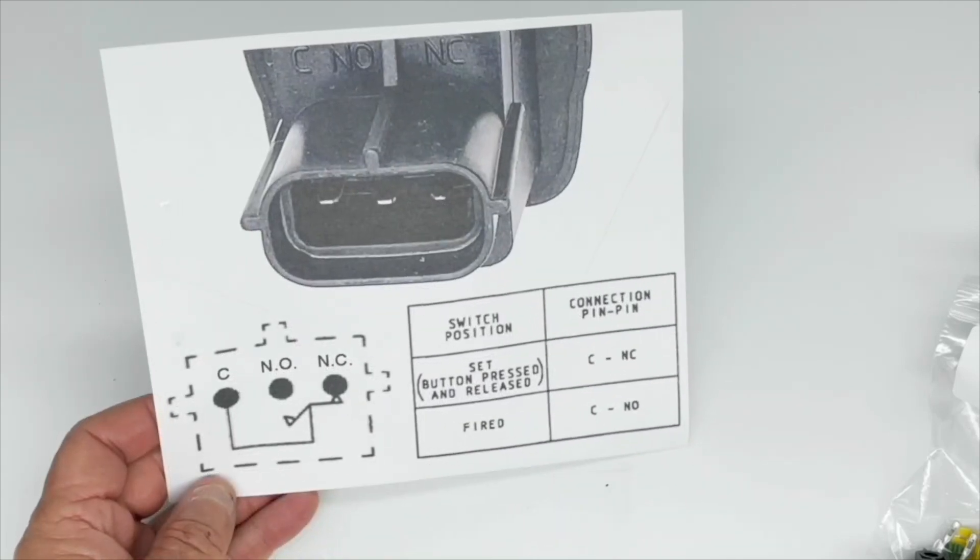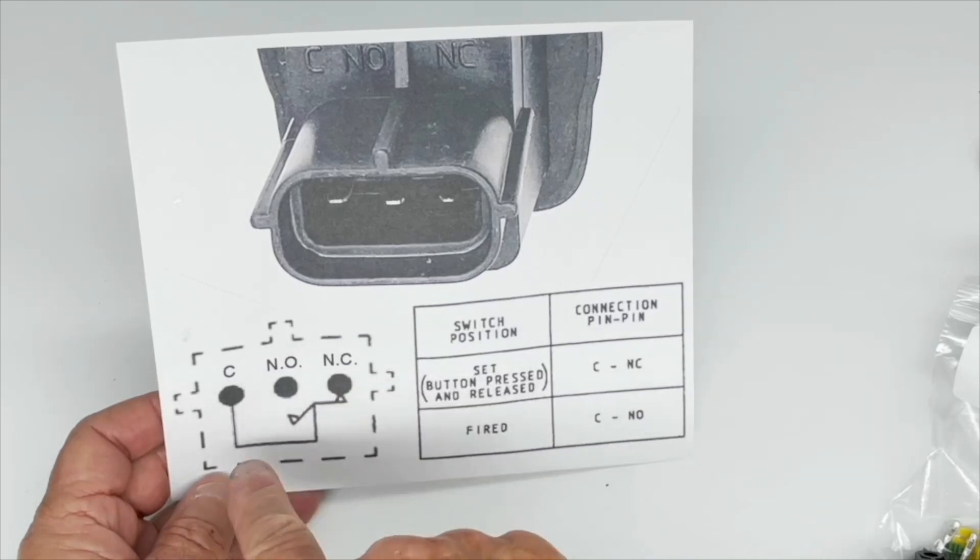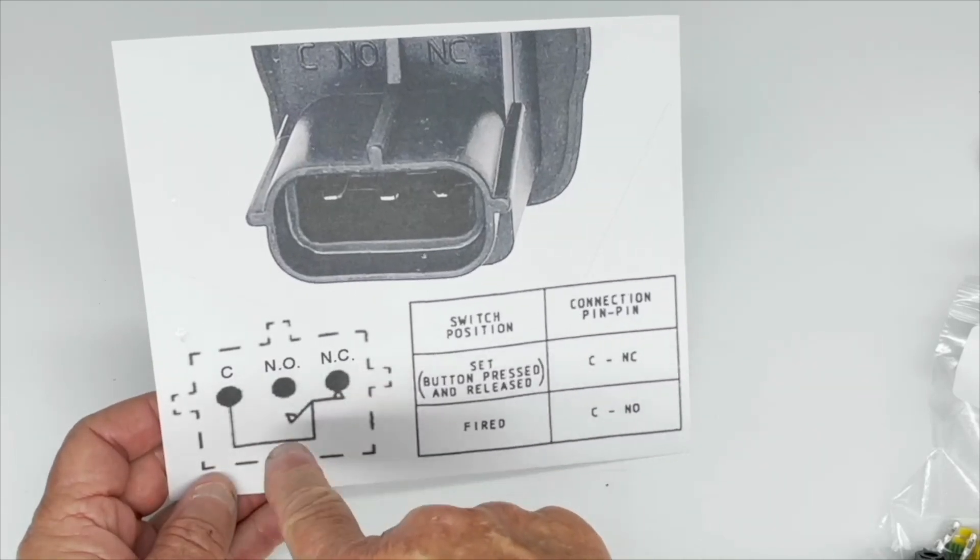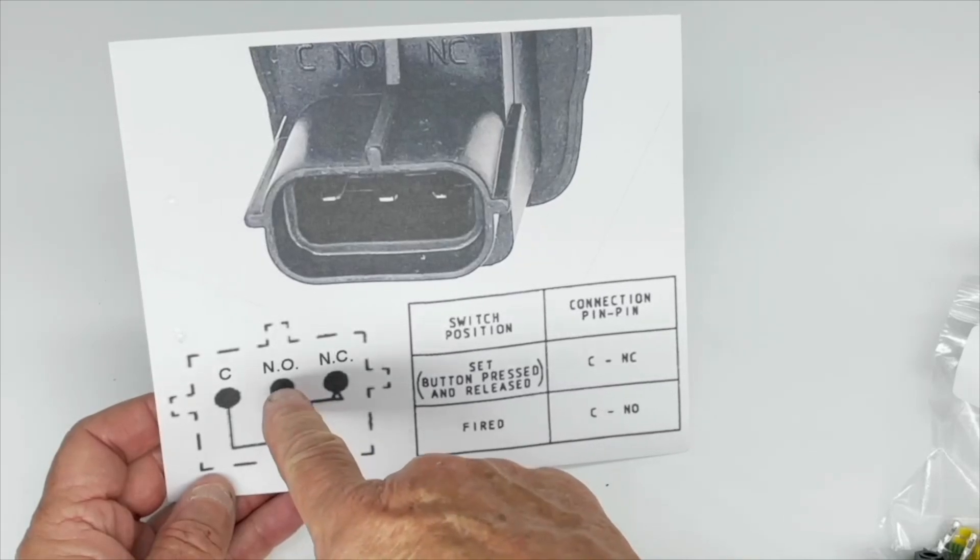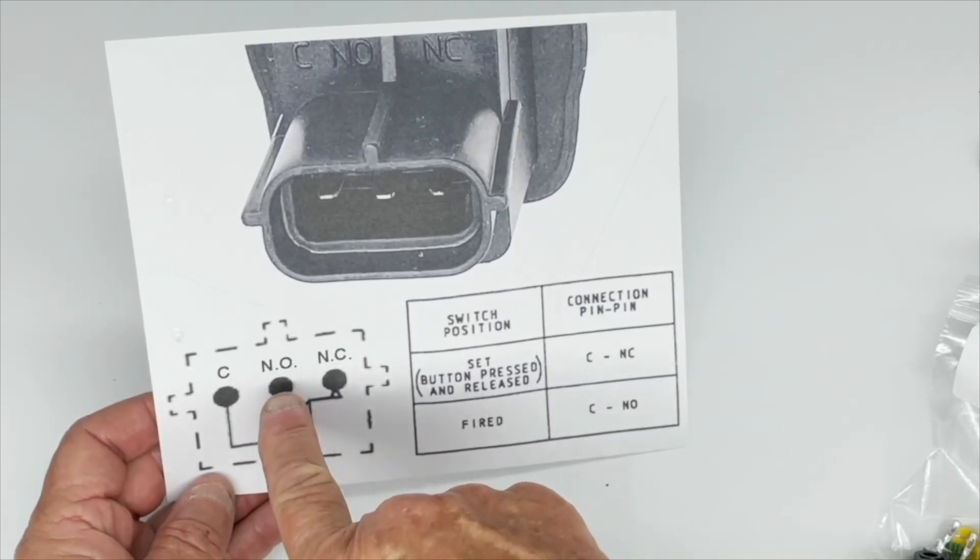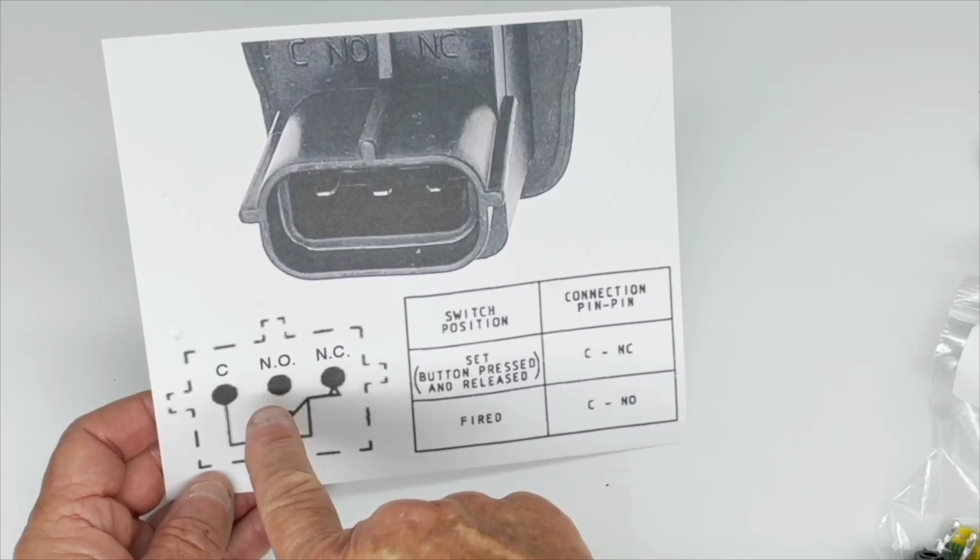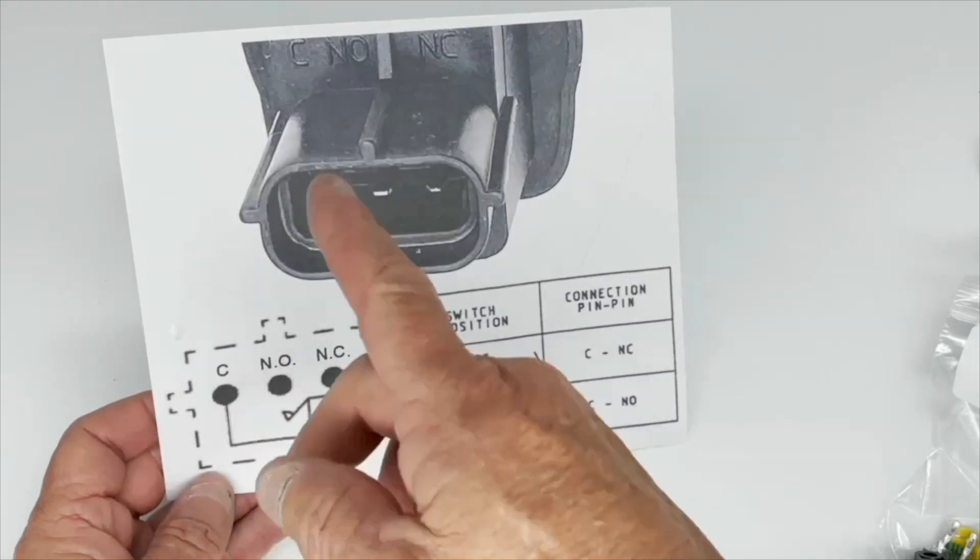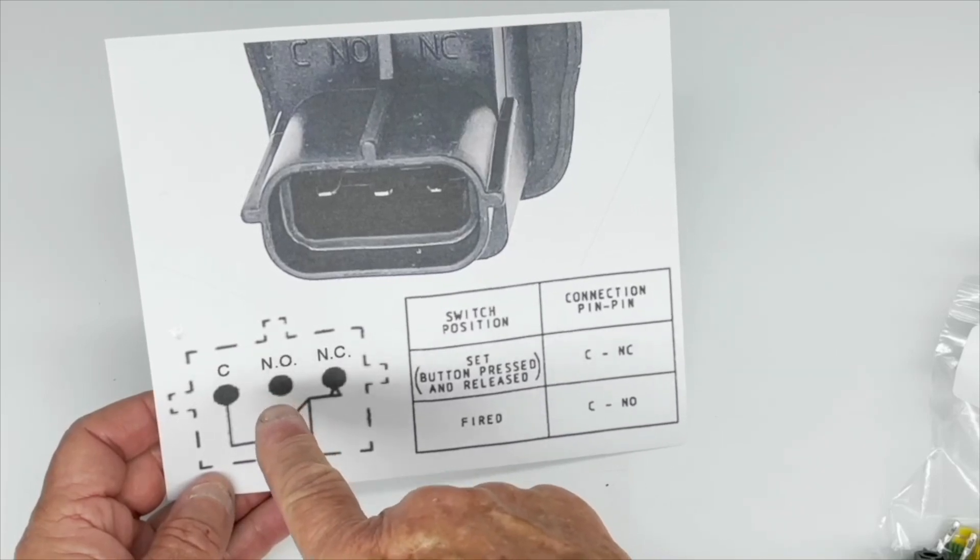So you'd wire your 12 volt supply to your fuel pump through this and this terminal, C and NC. On the NO terminal you could wire a warning lamp on the dash telling you that the switch has been activated, or you could also wire a GPS distress locator.